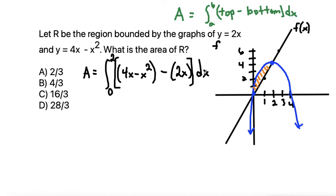Okay, now we just need to evaluate our integral. Let's start by simplifying. We have the integral from 0 to 2. 4x - 2x makes 2x. So that's 2x - x². And those are all of our like terms that we can combine. Now we have individual terms that we can use the power rule.